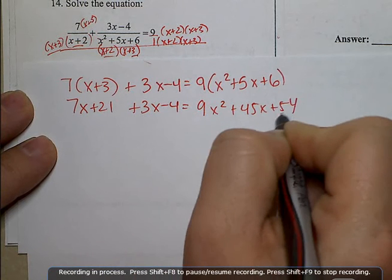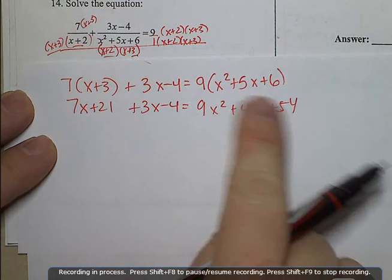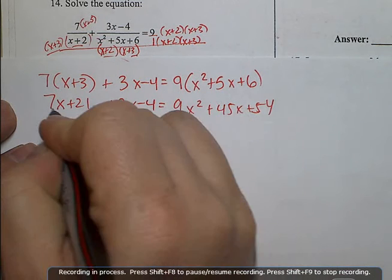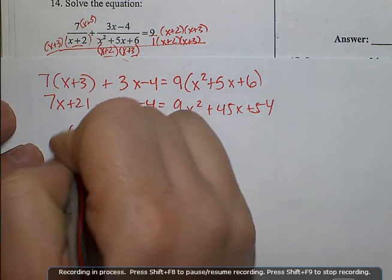And now I'm going to combine like terms by moving everything to the same side as the x squared. When all of this moves over to the right, there will be nothing left on the left-hand side.